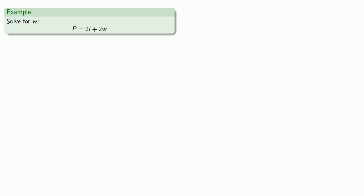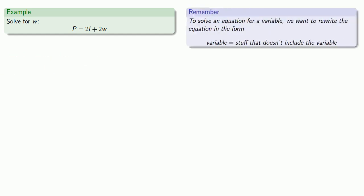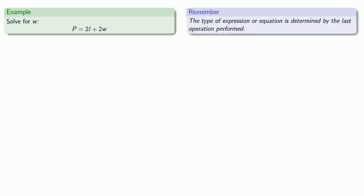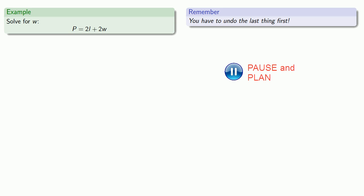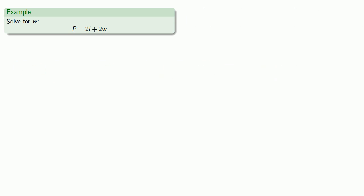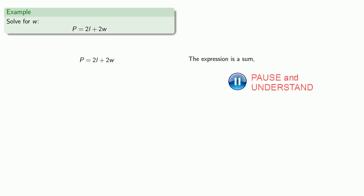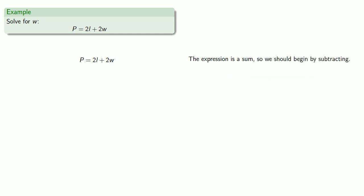How about the equation P equals 2L plus 2W, solved for W? To solve an equation for a variable, we rewrite it in the form variable equals stuff that doesn't include the variable; the type of expression is determined by the last operation performed, and you have to undo the last thing first. The expression 2L plus 2W has multiplications — 2L and 2W — and an addition. We have to do the multiplication first, which means the addition is done last. So the expression is a sum, and we should begin by subtracting. Since we want to solve for W, we'll subtract 2L.